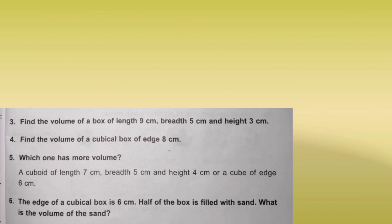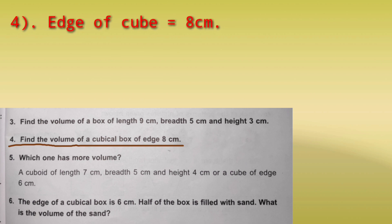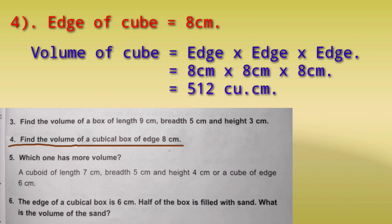Question number 4: find the volume of a cubical box of edge 8 cm. It is a cube, so all sides are equal. Volume = edge x edge x edge = 8 x 8 x 8. So 8 x 8 = 64, and 64 x 8 = 512 cubic centimeters.